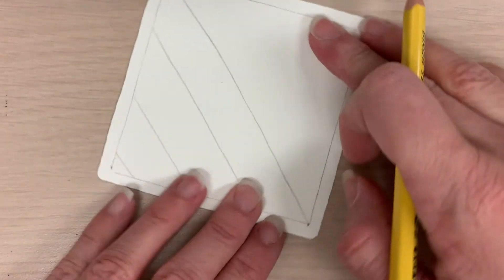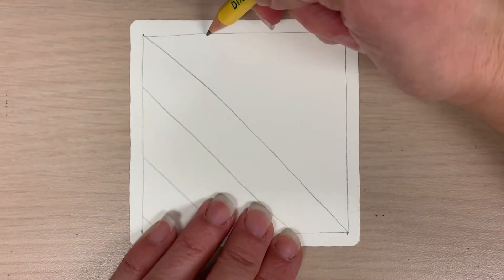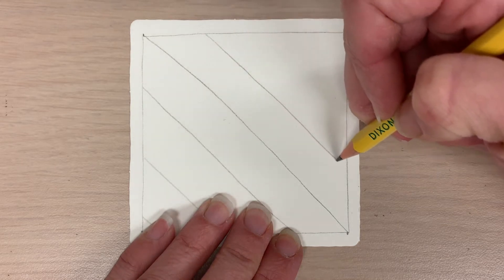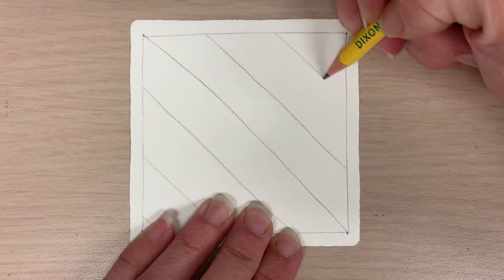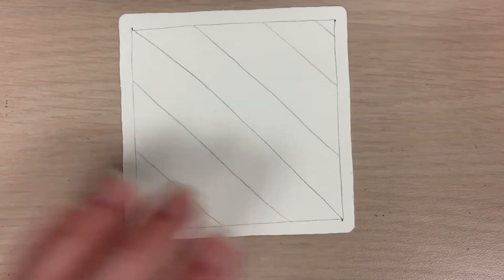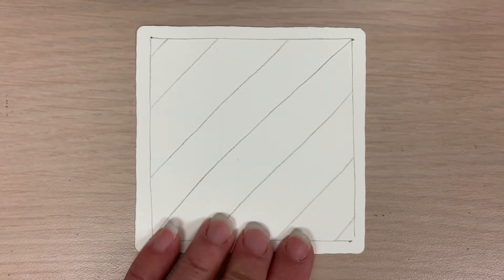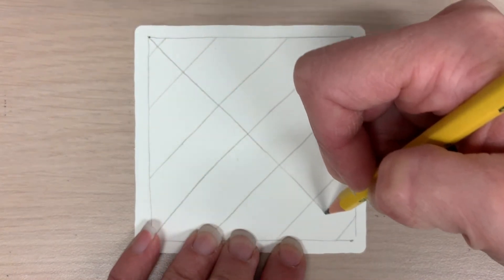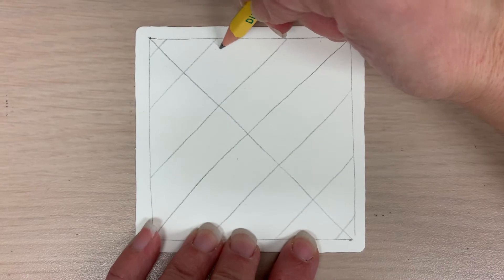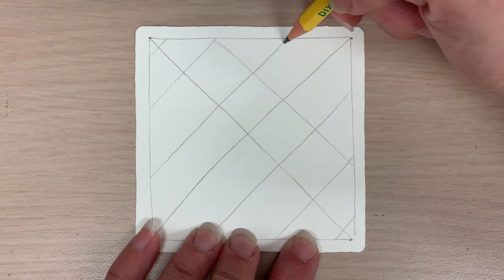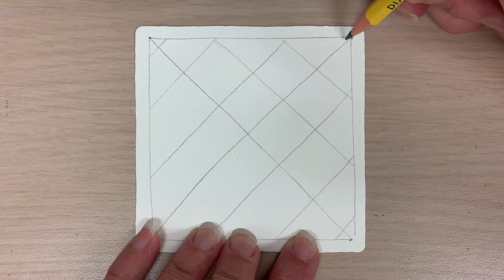I'm going to rotate this and I'm going to do it on the other side. If you have a little piece like that, that's perfectly fine. Then you're going to do the same thing in the opposite direction and just do your best. If your lines are a little wobbly it's okay, it'll work out in the end.